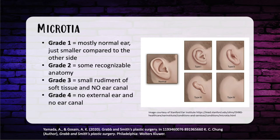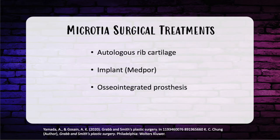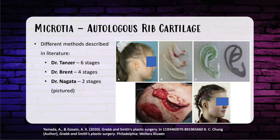Microtia can be associated with syndromes like Goldenhar and Tessier number seven. Most non-syndromic microtias will have formed inner ears with some hearing. Bilateral microtia patients with conductive hearing loss are candidates for bone-anchored hearing aids, but ear reconstruction must be done first before placing the hearing aid. Workup includes audiometric testing for conductive and sensorineural hearing. There are three surgical routes: autologous rib cartilage, a MedPor implant, or an osseointegrated prosthesis.